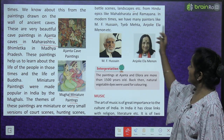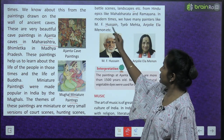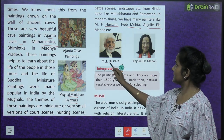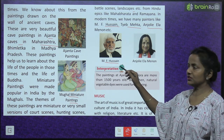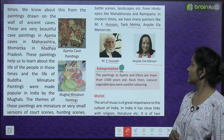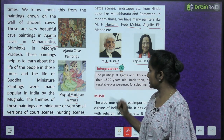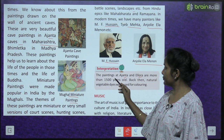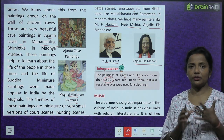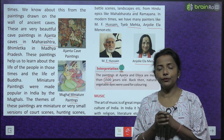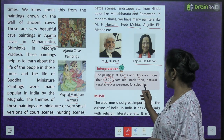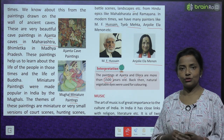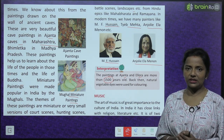In modern times, we have many painters like M.F. Hussain, Tayyab Mehta, Anjali Ela Menon, etc. The paintings at Ajanta and Ellora are more than 1500 years old. Back then, natural vegetable dyes were used for coloring — jo natural vegetable ki dyes hoti thi, woh use ki jaati thi.